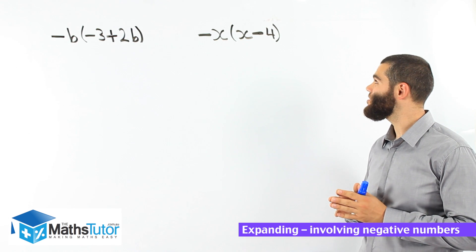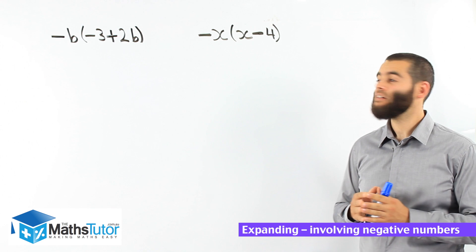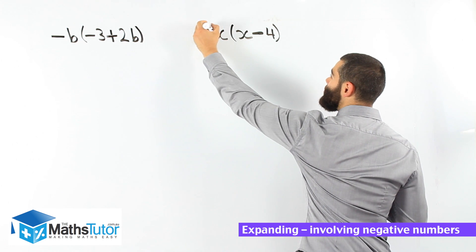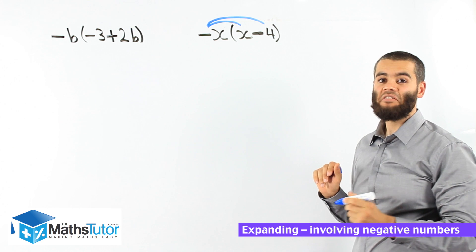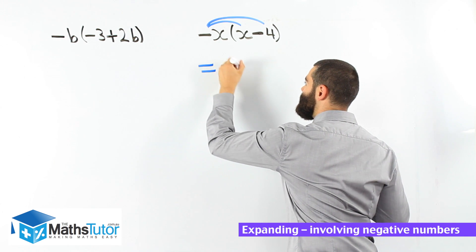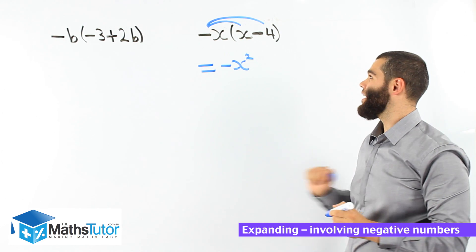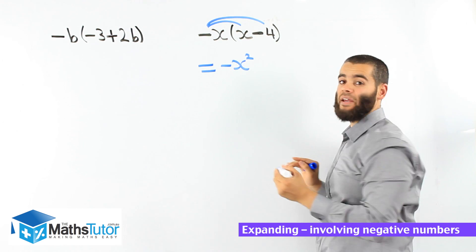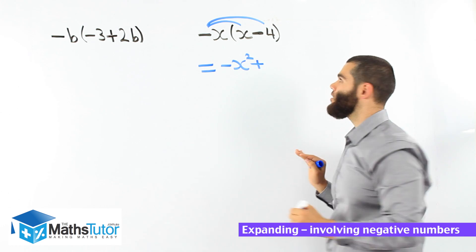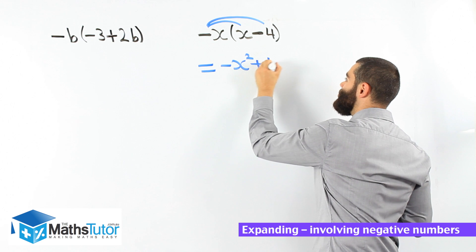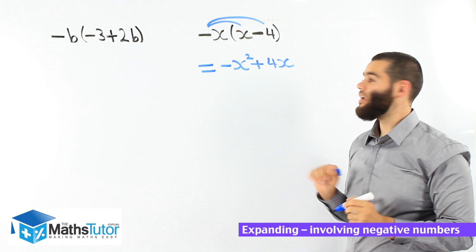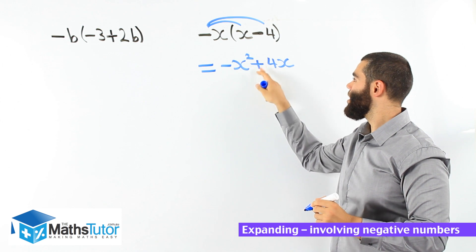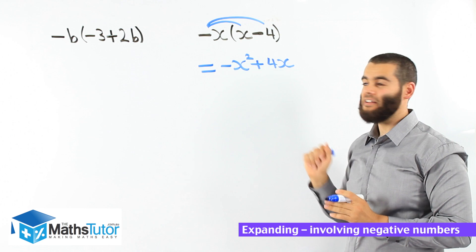Let's do these examples. We have negative x, open bracket x minus 4, close bracket. So the negative x is going to multiply everything inside. Negative x times x is negative x squared. Then negative x times negative 4 — two negatives multiplied together make a positive — so that becomes positive 4x. Our answer: negative x squared plus 4x.